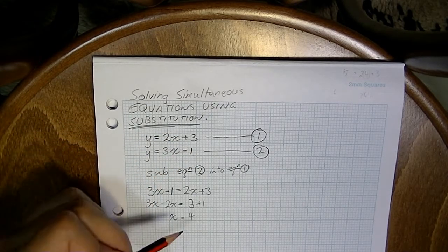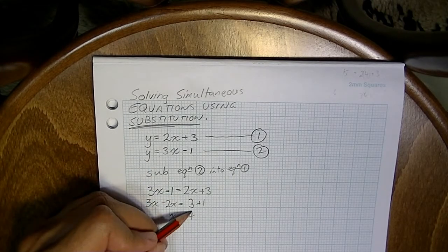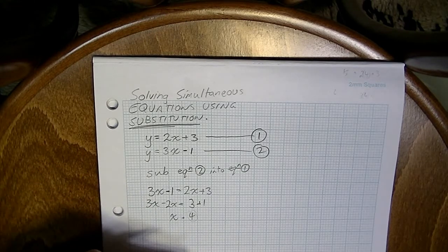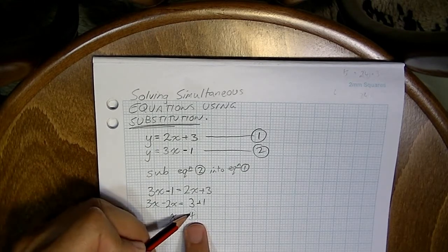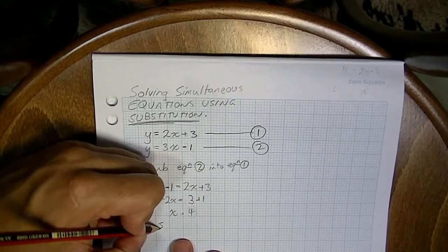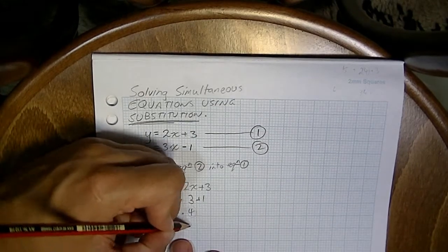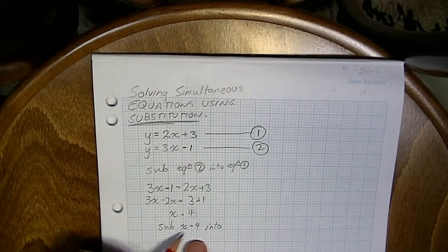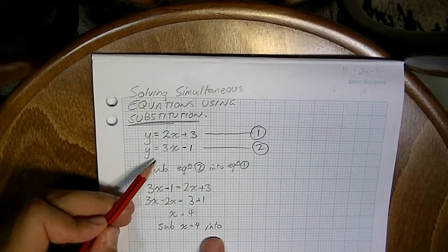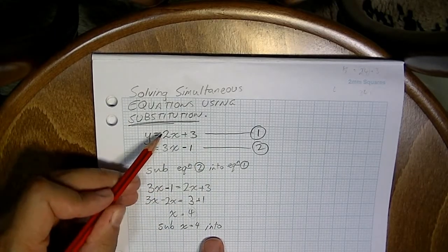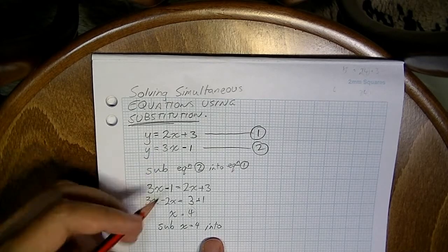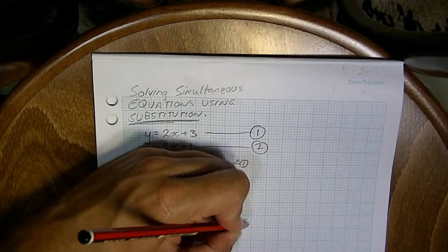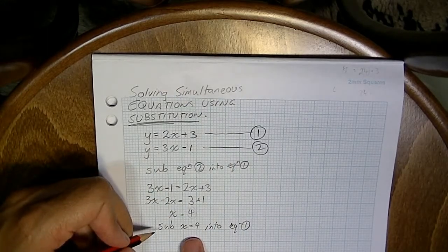Now, that means that the simultaneous solution to these equations has an x value of 4. But remember, a simultaneous solution isn't just one singular value. It's a point on a Cartesian plane. So we need to take that 4 and sub x equals 4 into... Now, it doesn't matter which of these equations you sub it into. You can sub it into equation 1 if you want. Sub it into equation 2. I'm just going to sub it into equation 1.